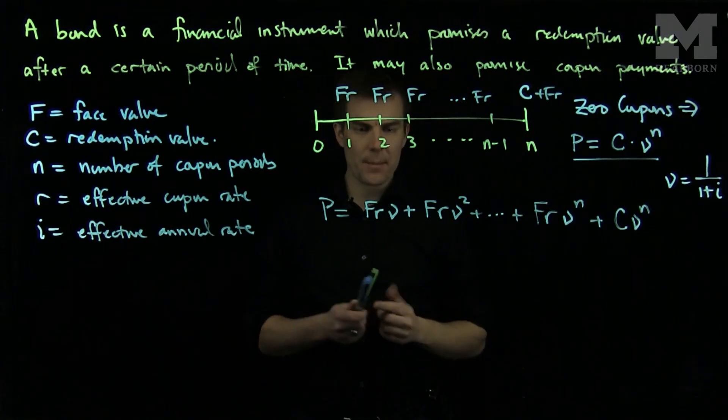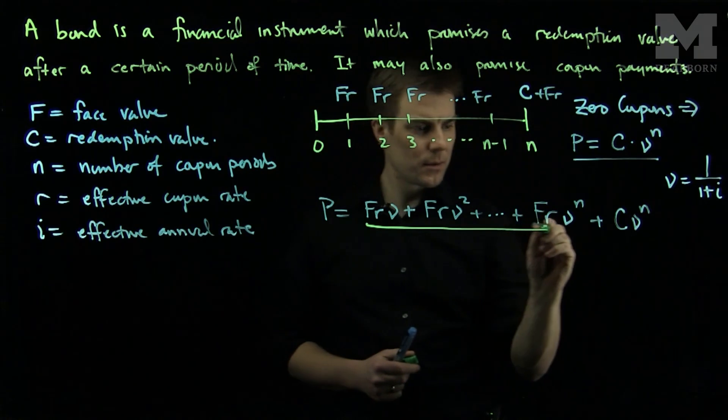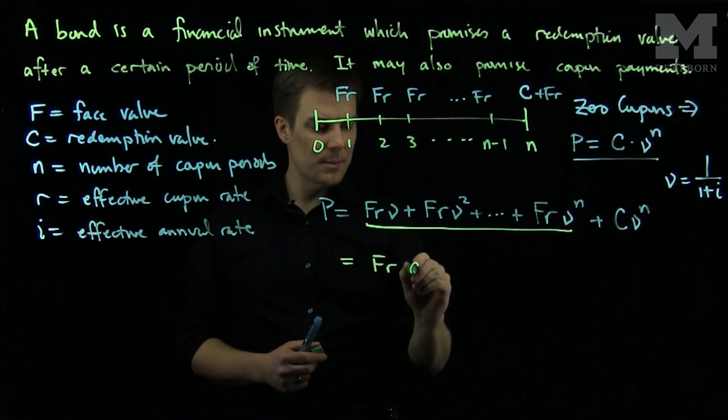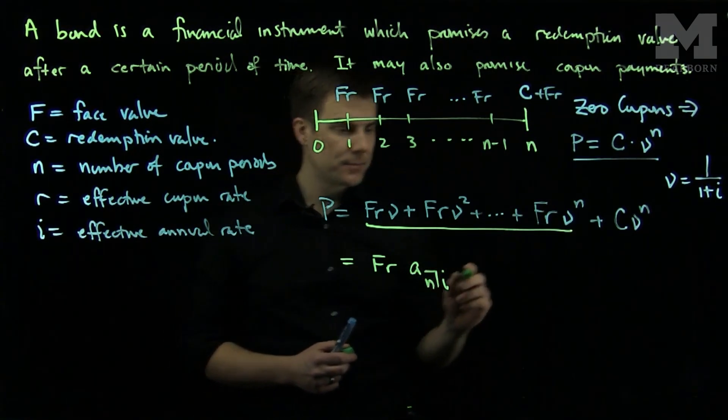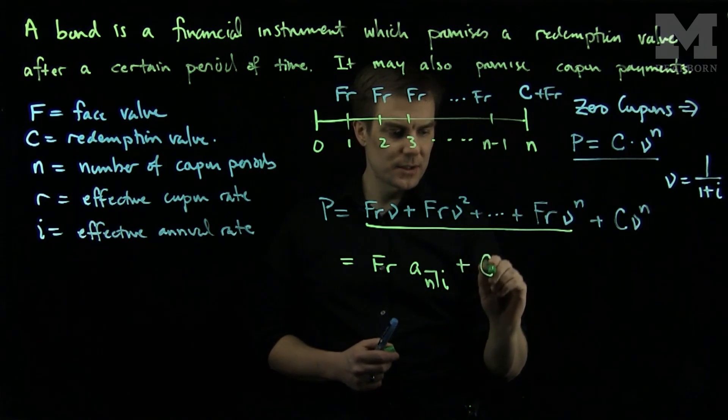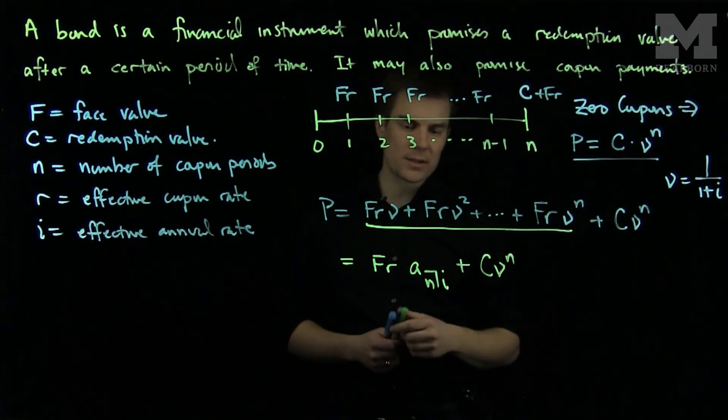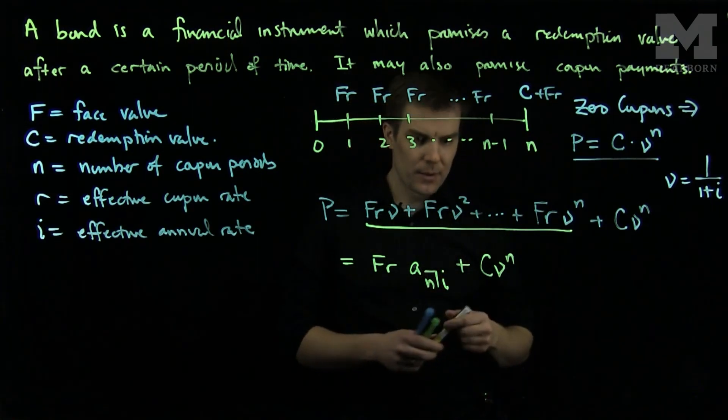And so we can examine this expression, and we see that these terms over here can be rewritten as FR times a angle N at I plus Cν^N. So this is the price of a bond that has coupons given in this stream.